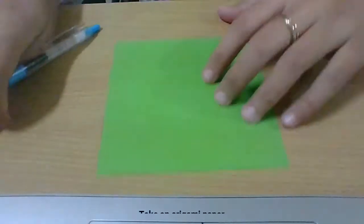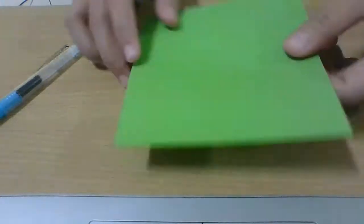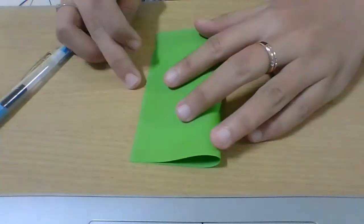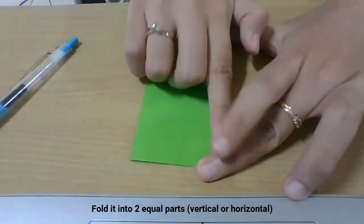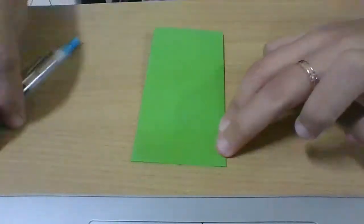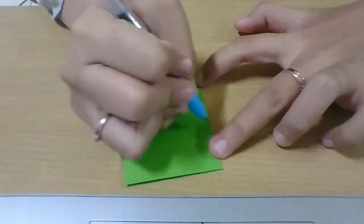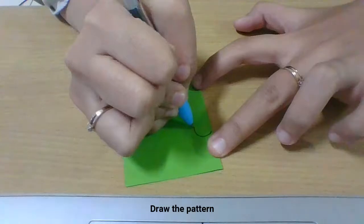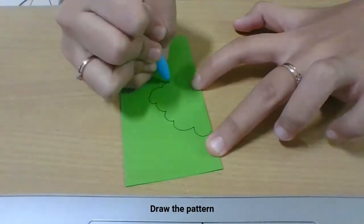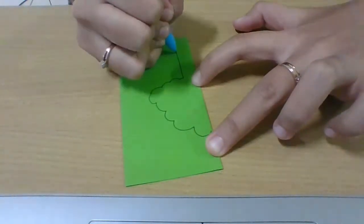Take an origami paper with any color and then fold it into two equal parts. And then draw the pattern. Here I draw a tree.